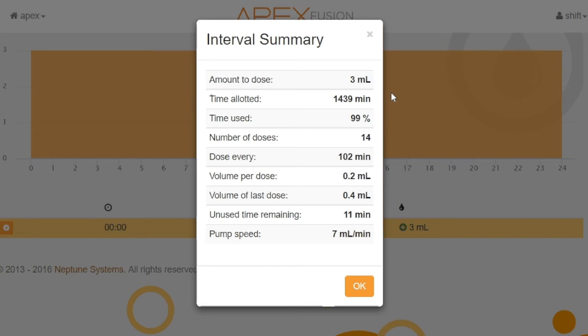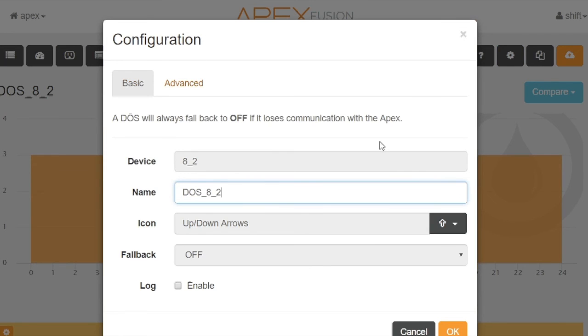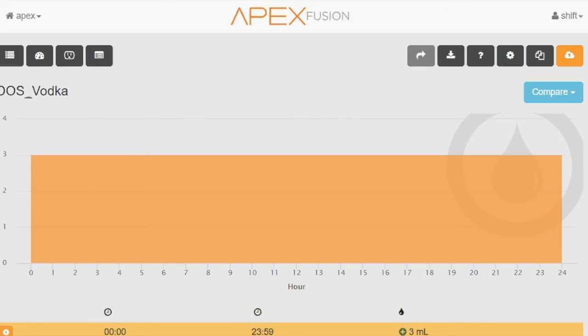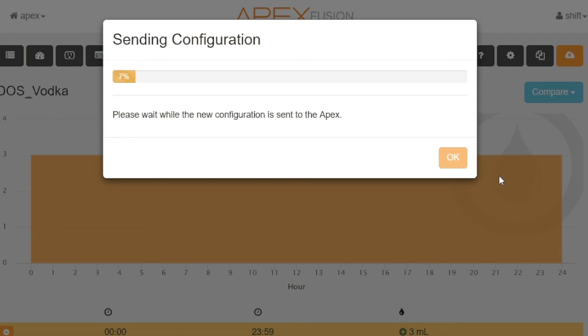And so you're giving those nutrients or carbon source, whatever you want in your tank throughout the whole day. So looking at this, the number of doses, 14. So we're going to do 14.2 milliliter doses. And the final dose would be 0.4 milliliters. Pump speed is 7 mils per minute. So splits it up throughout the whole day. I'll say, okay. And next, I'm just going to rename it so I know what it is. So dose, vodka. Okay. And then turn it off. All you do is hit upload. And your pump is programmed. It's just that easy.